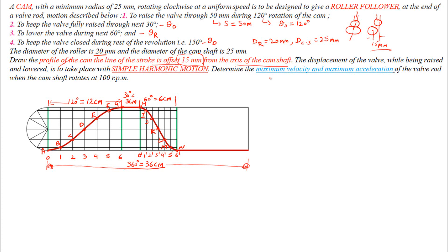All the other parameters like angle of rise, dwell, and return are the same as the previous video question in which the axis of the follower passes through the axis of the cam shaft. I recommend you to please see that video first. The displacement diagram of the follower has already been explained in the previous video, so I will directly move towards the cam profile.